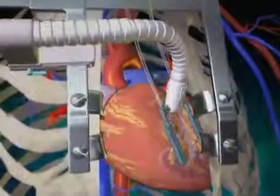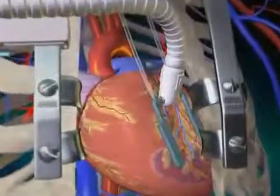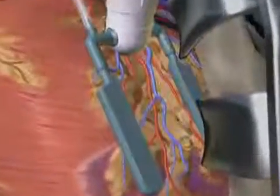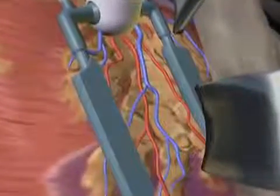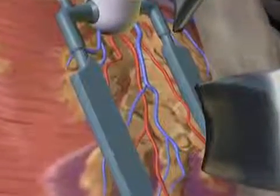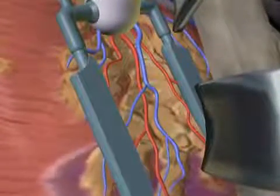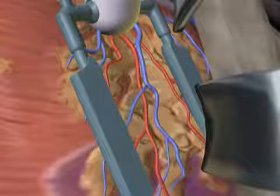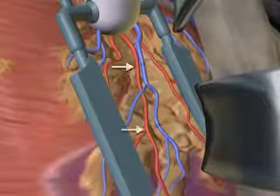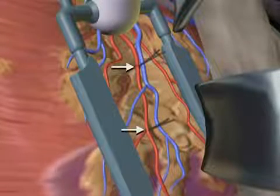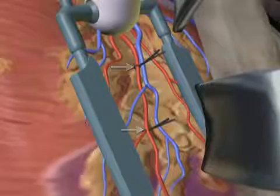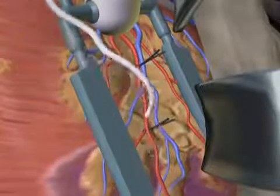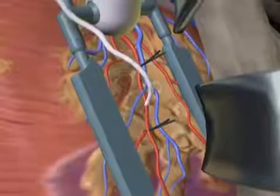In one form of OP-CAB, the chest is open and the surgeon uses a stabilization device to restrict the heart's motion. A small elastic tape may be placed around the blocked artery to stop the flow of blood.